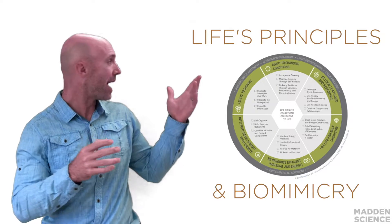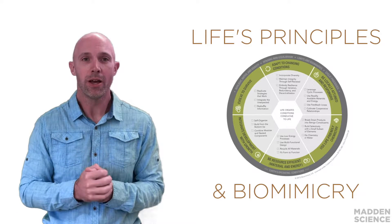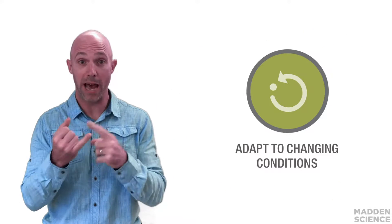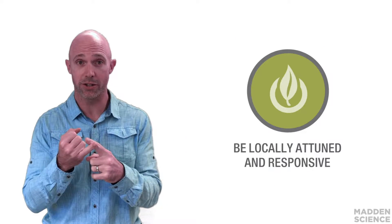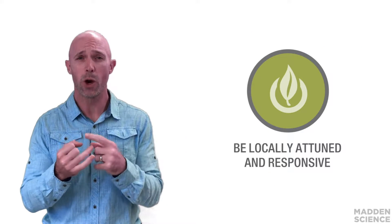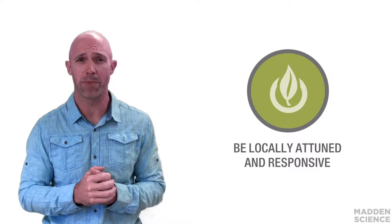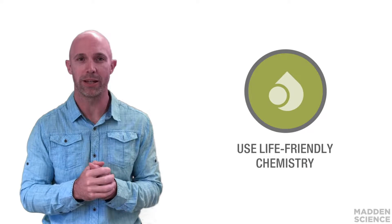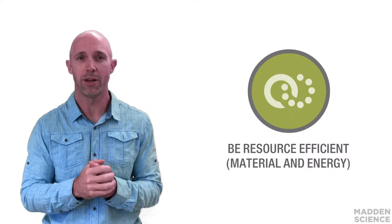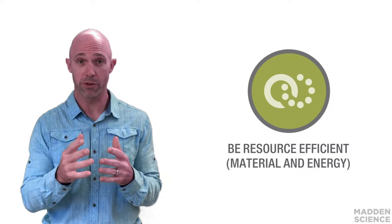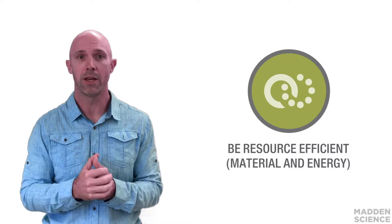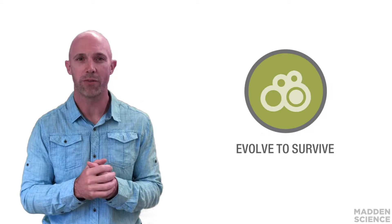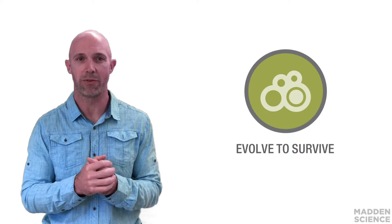As you can see in this diagram, the six main principles are: adapt to changing conditions, be locally attuned and responsive, use life-friendly chemistry, be resource efficient, integrate development with growth, and evolve to survive.